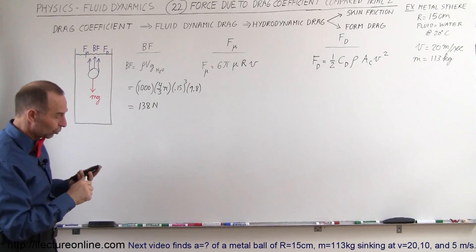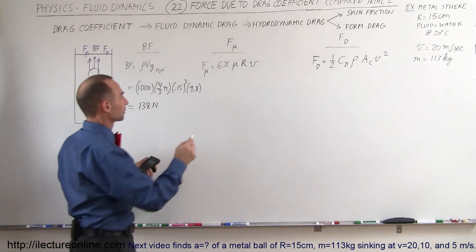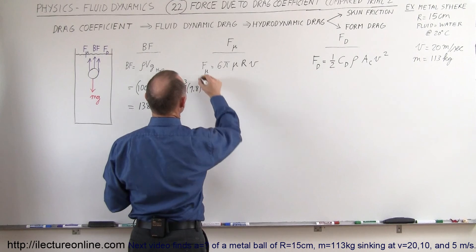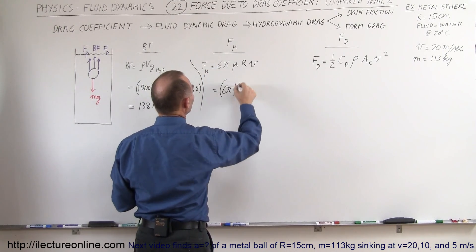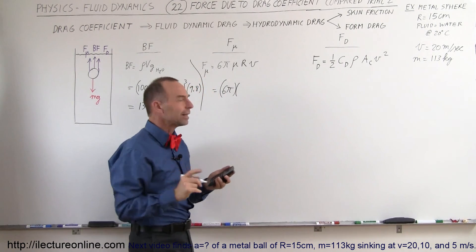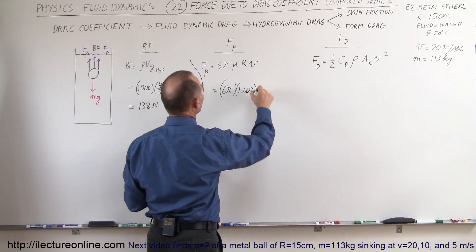Now let's find out what the force is due to the viscosity of the fluid. So that would be equal to 6π times μ. For water at 20 degrees centigrade that's 1.002, so very nearly 1.